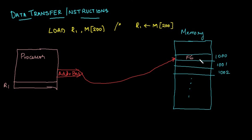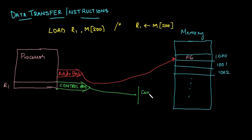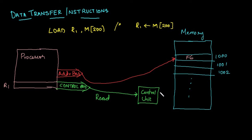The memory has received the address but doesn't know what to do because the processor hasn't given a command yet. To command the memory, the processor uses a control bus. The control bus sends signals to the memory's control unit — don't confuse this with the control unit inside the processor. This control unit decodes the control signal sent by the processor. Since we are reading data from memory, a read signal is sent on the control bus.